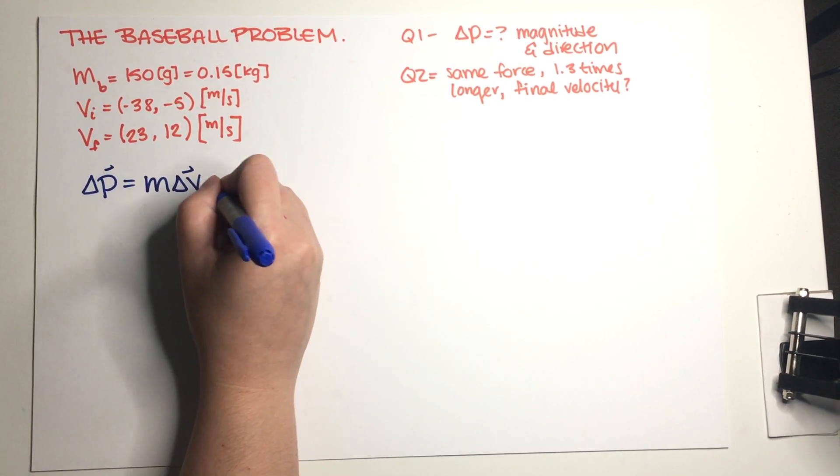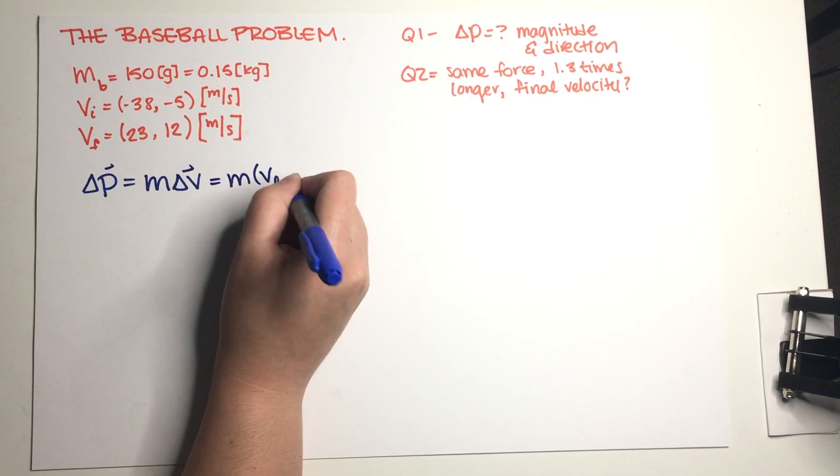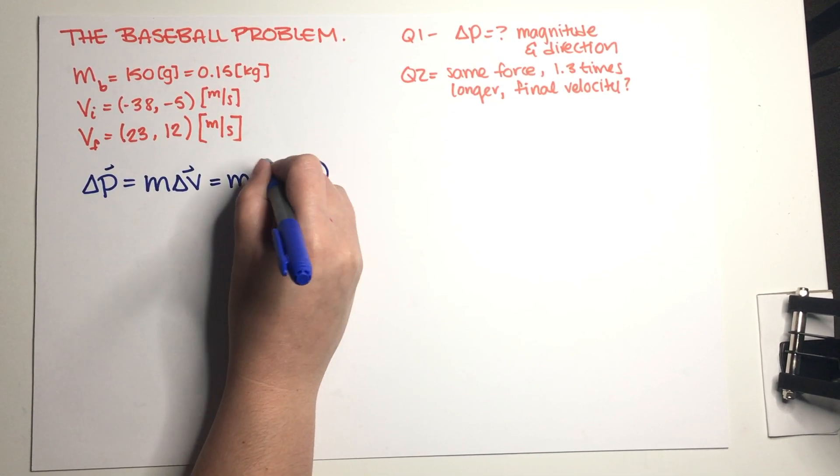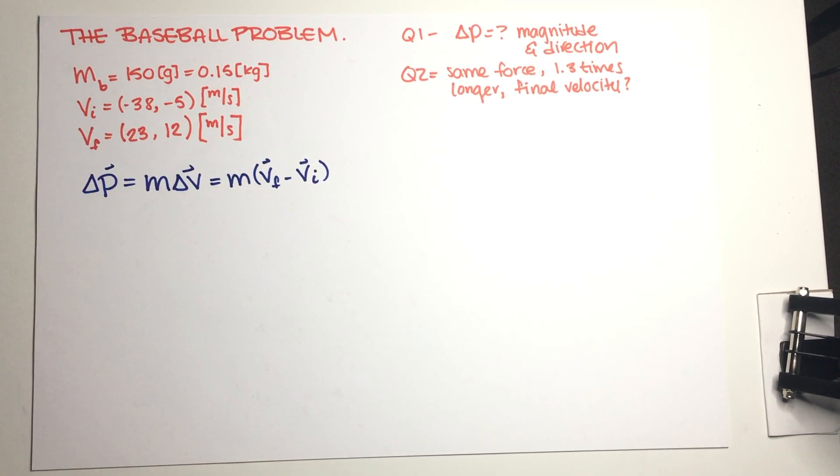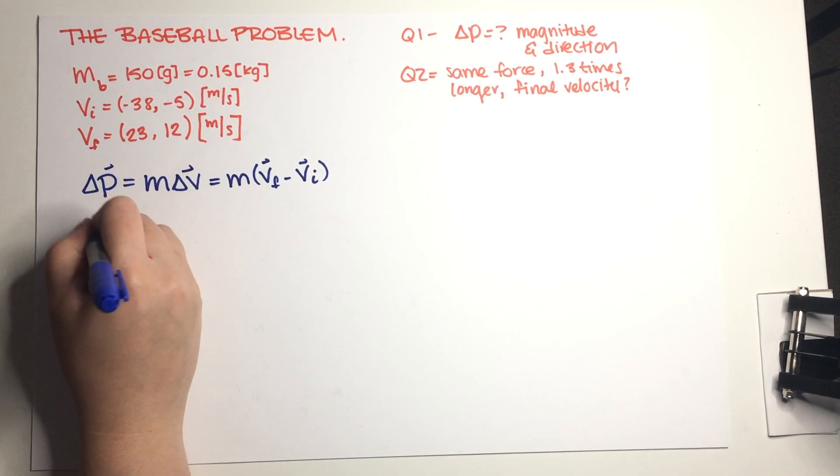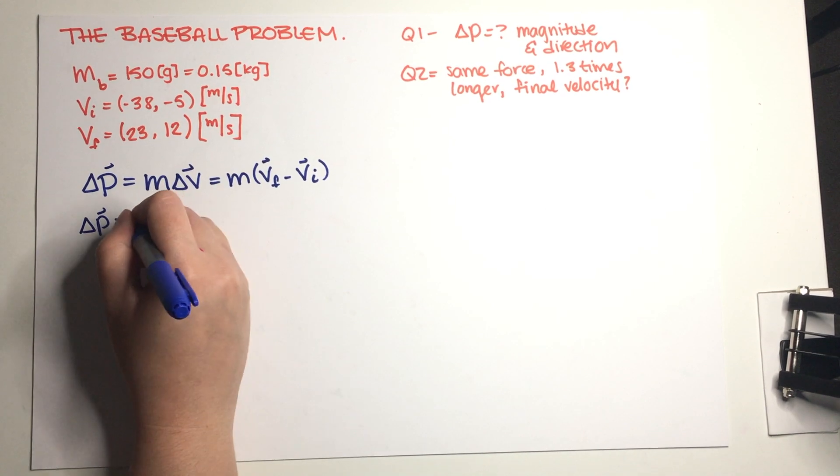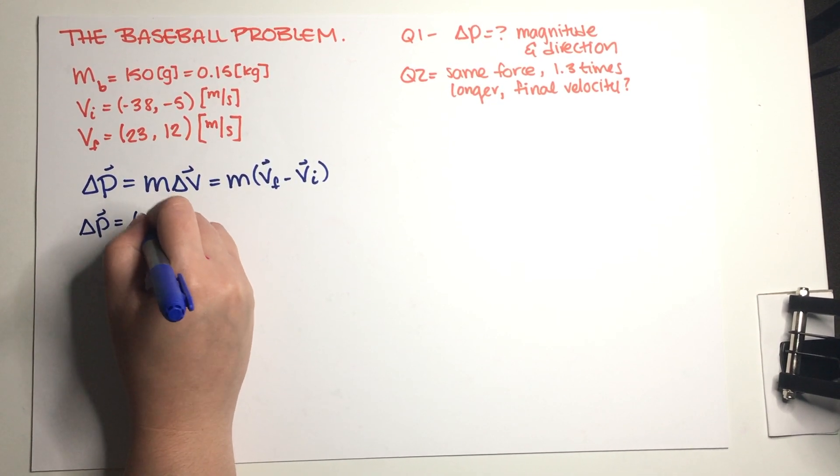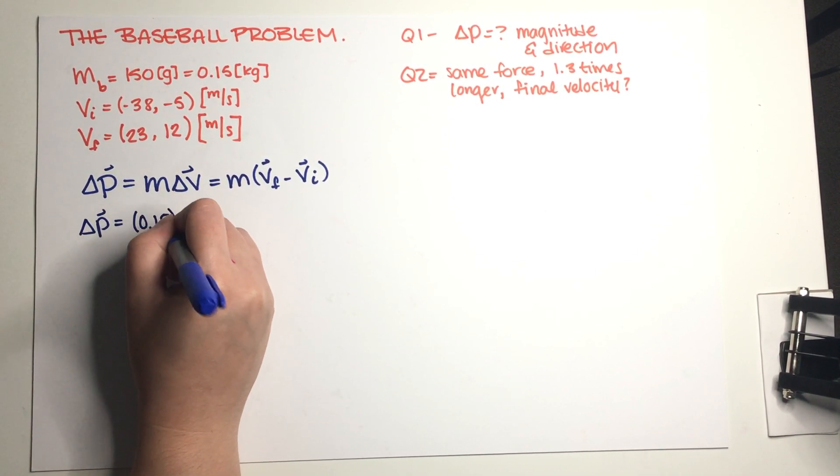So basically we just need to... and then this is just final minus initial, right? And we have our final and our initial so let's just go ahead and copy that and just get a number.